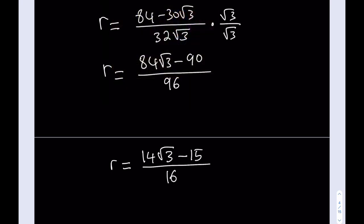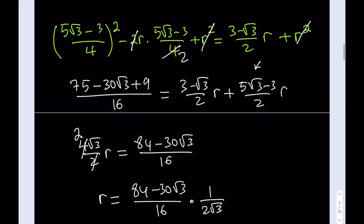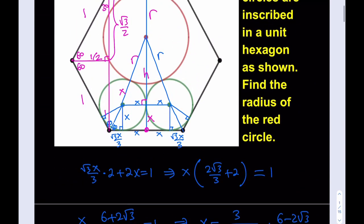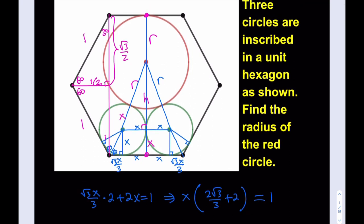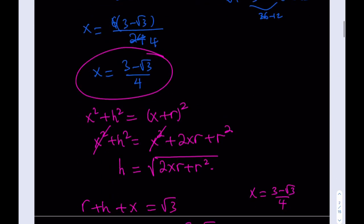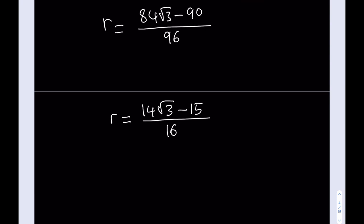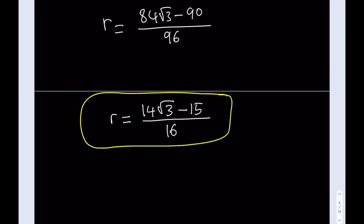And that's going to be the radius of the red circle — that's what we've been looking for. We found X, we had to find it, but now R is the radius of the red circle, and R = (14√3 − 15)/16. That's our answer. Thank you for watching. I hope you enjoyed the puzzle. Don't forget to comment, like, and subscribe. I'll see you in the next video. Take care, bye-bye.